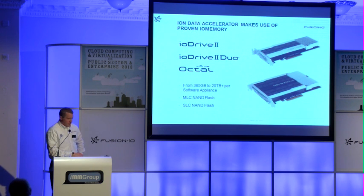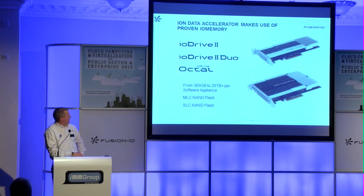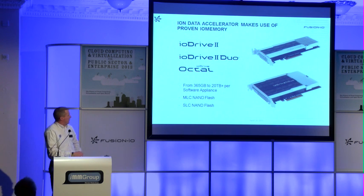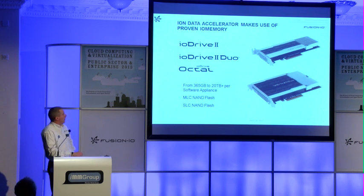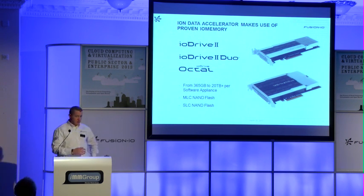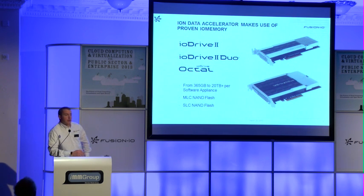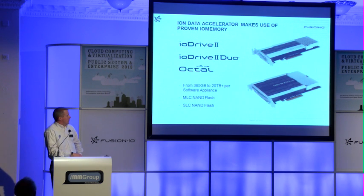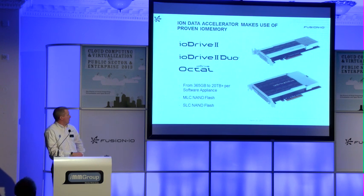Here's an example of our generation two IO drives: 1.2 terabytes at the top, 2.4 terabytes in the lower slot. The 3.2 terabyte cards I was referring to before are not shown here. You can see the form factor — full height half length, or half height half length.